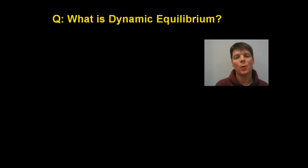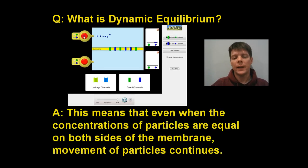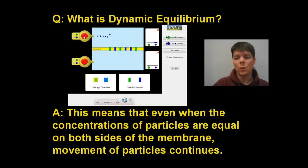The last concept we're going to talk about is the idea of dynamic equilibrium. Equilibrium means that we have things which are balanced. Dynamic means that there's still stuff happening. So if we have concentrations of particles that are equal on both sides of the membrane, that would be equilibrium. The dynamic part means that we're still going to have movement of particles — there are still particles moving through the membrane.